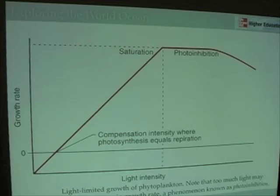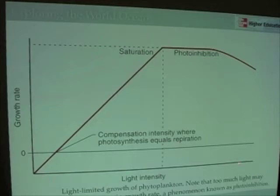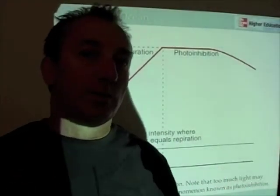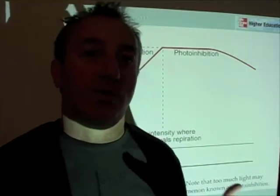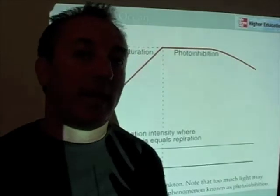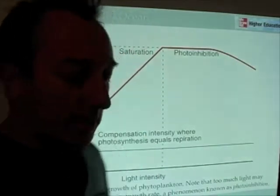If we look at light intensity and how it affects growth rate in the ocean, we have a curve where on the x-axis we have light intensity increasing from zero, and on the y-axis we have growth rate. As light intensity increases, the rate of growth increases — but it doesn't increase indefinitely. Turning on more lights isn't necessarily going to make a plant grow faster. There's a point at which that's all the light the plant can absorb and process, called the saturation point.